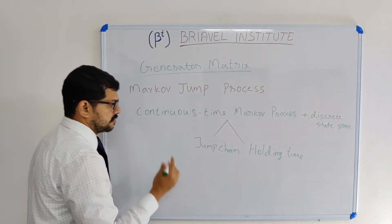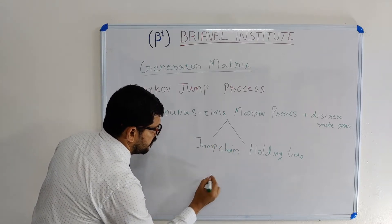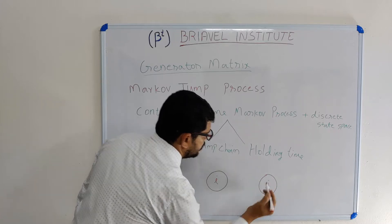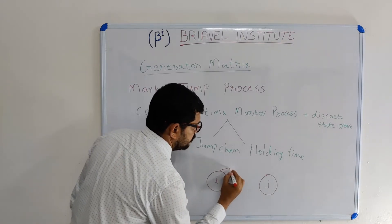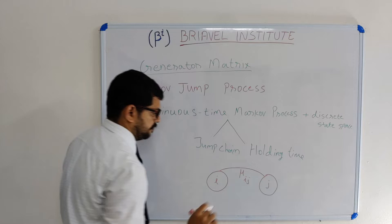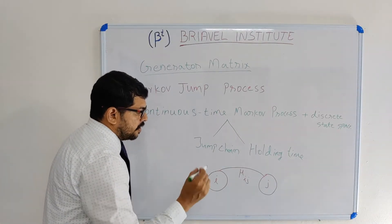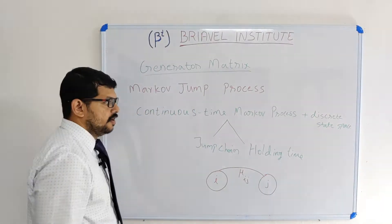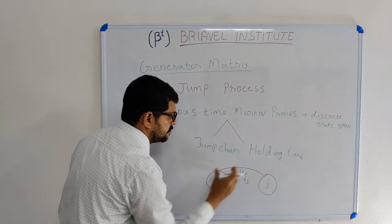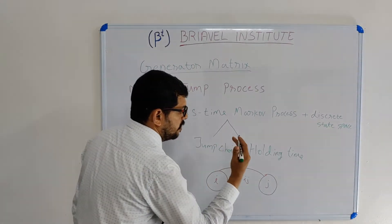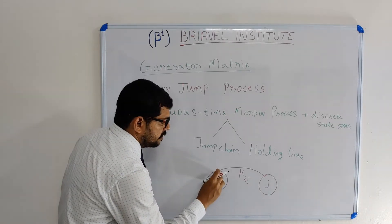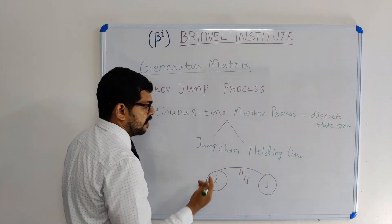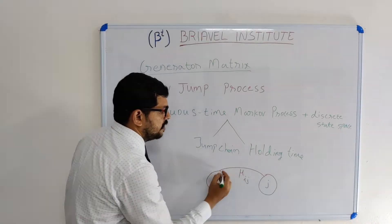To understand these two processes, we take two states in discrete state space: state i and state j. There is a transition from state i to state j, written as μij. We will stay at least some time in state i, and after that we move to state j. The holding time explains how much time we are staying in one state. The movement from state i to state j is called the jump chain.